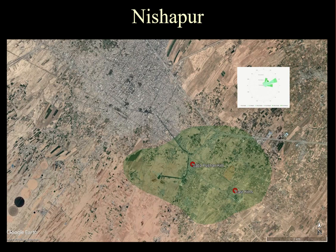Nishapur was destroyed by the Mongols in about 1221. When they rebuilt the city, they rebuilt it over here — the site of modern Nishapur. There are a couple of kiln finds here. The east kilns were used when this was a city, so it probably wasn't densely occupied in the eastern areas, which may have included some of these less pleasant industries. This one is actually the 15th-century kilns, when the city was over here.